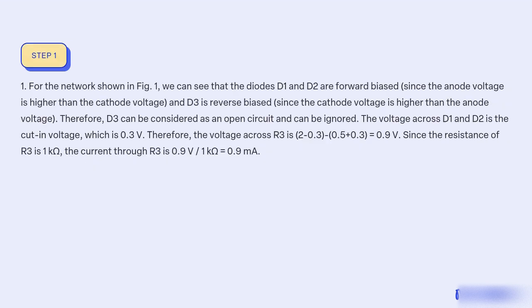One, for the network shown in FIG. 1, we can see that the diodes D1 and D2 are forward biased since the anode voltage is higher than the cathode voltage, and D3 is reverse biased since the cathode voltage is higher than the anode voltage. Therefore, D3 can be considered as an open circuit and can be ignored. The voltage across D1 and D2 is the cut-in voltage, which is 0.3V.